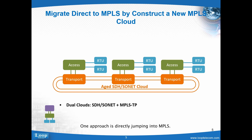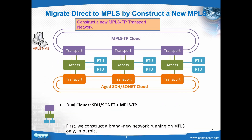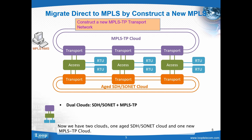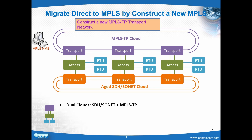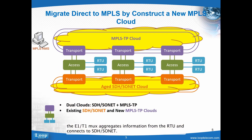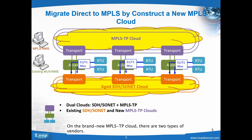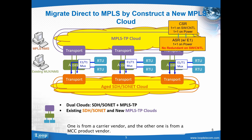One approach is directly jumping into MPLSTP. First, we construct a brand new network running on MPLSTP only, shown in purple. Now we have two clouds: one aged SDH Sonet cloud and one new MPLSTP cloud. In the current aged SDH Sonet access network, the E1T1 MUX aggregates information from the RTU and connects to the SDH Sonet. On the brand new MPLSTP cloud, there are two types of vendors: one from a carrier vendor and the other from an MCC product vendor.